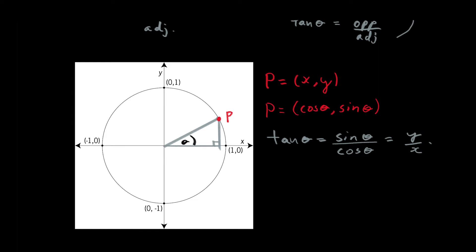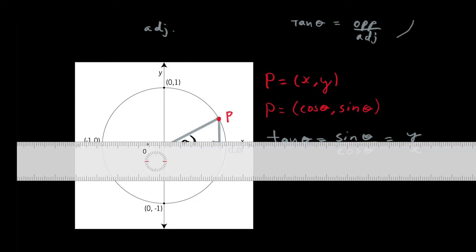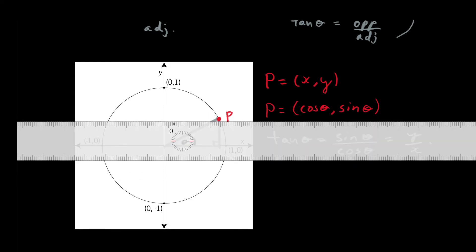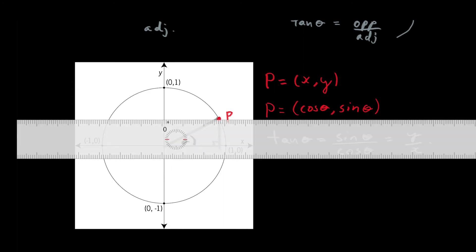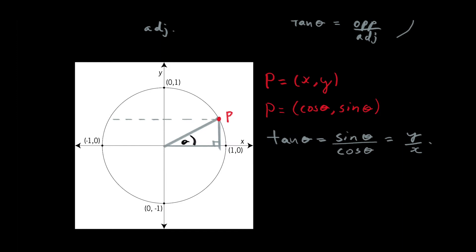So it might seem like we're always taking the sine, cosine, and tangent of acute angles — angles that are less than 90 degrees or less than pi over two radians. But if you consider — and this is something we've done in a previous video — this point P has a Y component, and we can see that there's going to be a corresponding point Q on the unit circle that has the same Y component as the point P.